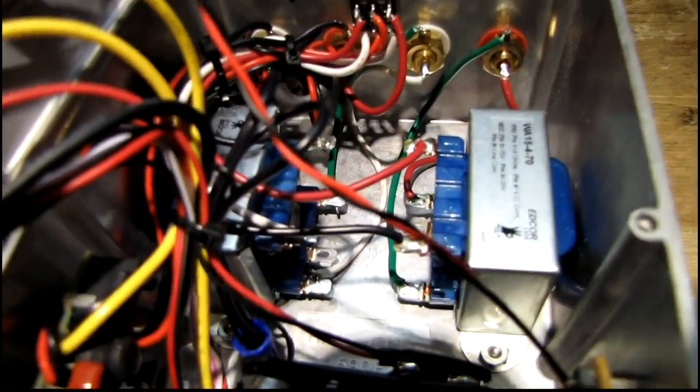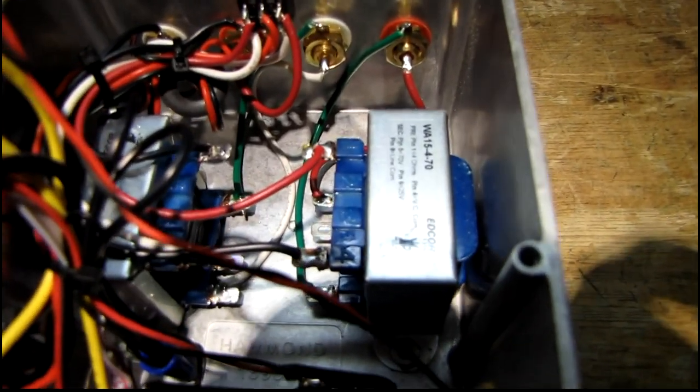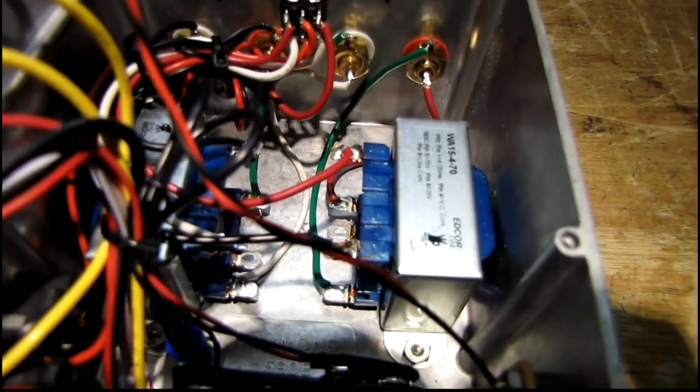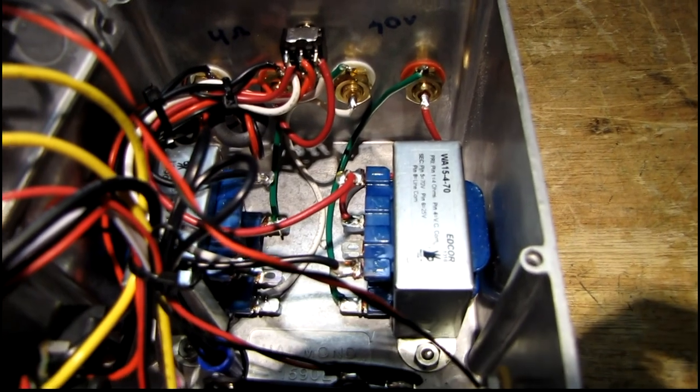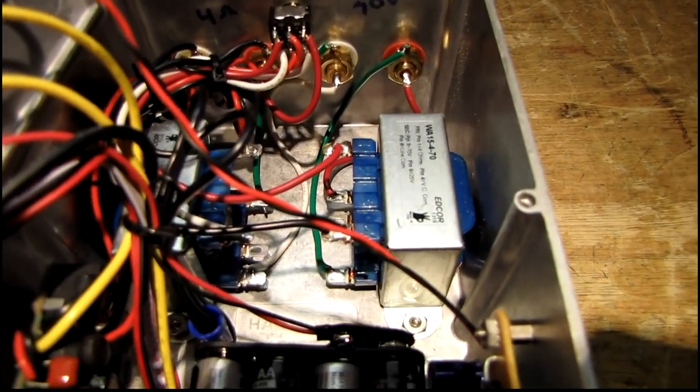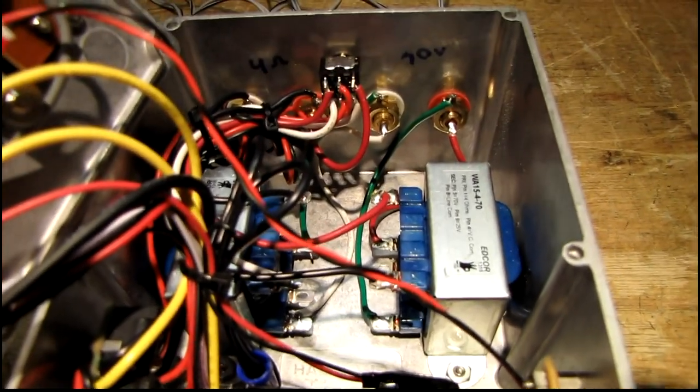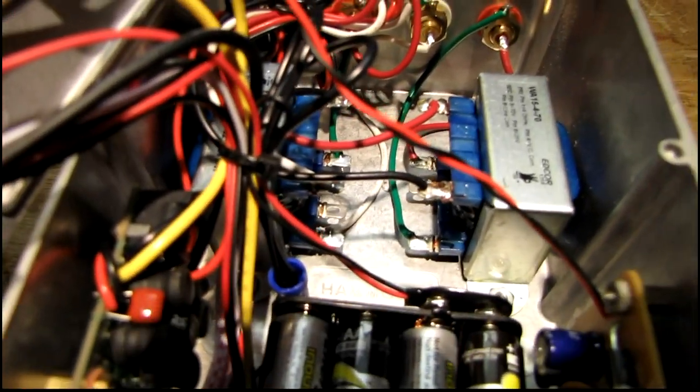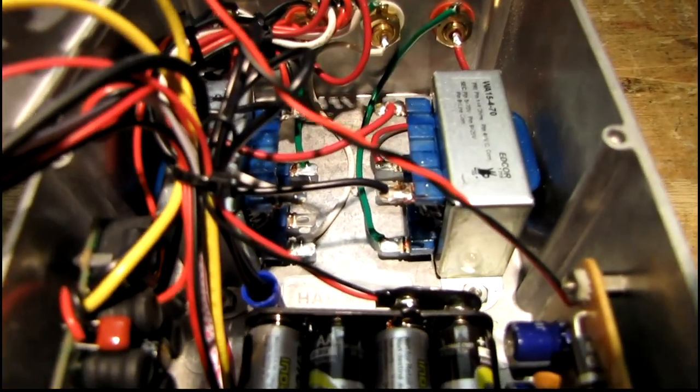These little transformers are the 70 volt output transformers. They are made by Edcore Electronics right here in the USA. These are specifically designed to take a 4 ohm amplifier and allow it to drive 70 volt speakers as well as 25 volt speakers, but I'm not using those tabs.